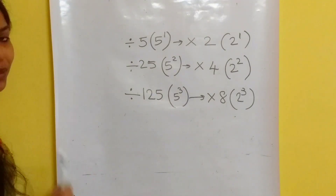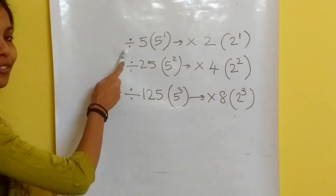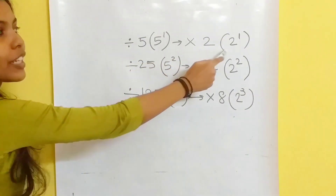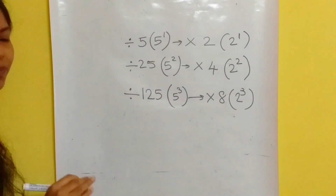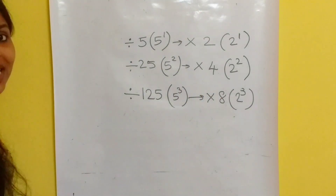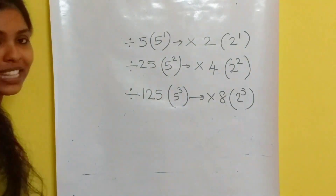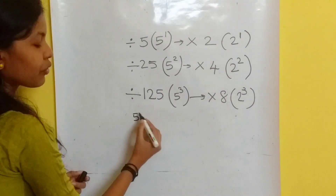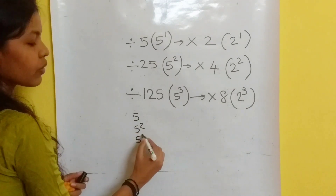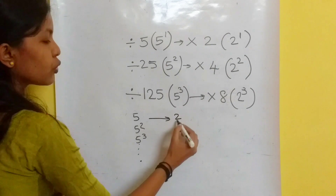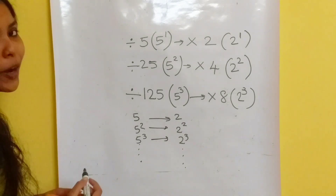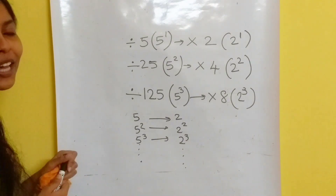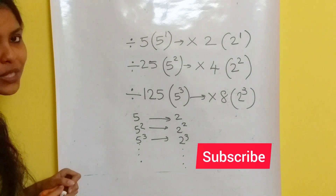So these are the inferences obtained. If you are dividing a number by 5, by 25 (which is 5 squared), or by 125 (which is 5 cubed), then you multiply by 2, 2 squared, or 2 cubed respectively. I hope you got a clear idea about these division tricks. For more tips and tricks, please subscribe to my YouTube channel. Thank you.